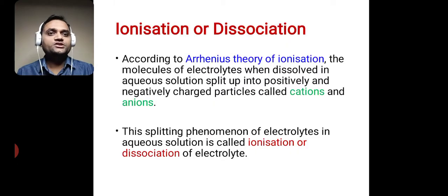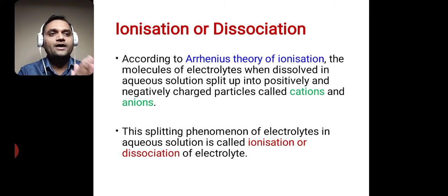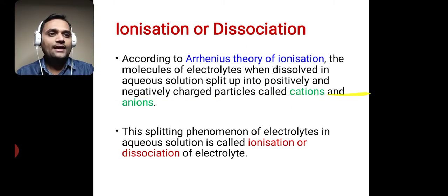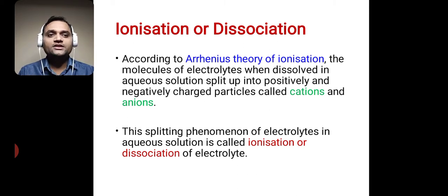According to Arrhenius theory of ionization — Arrhenius gave the theory of ionization — the molecules of electrolytes when dissolved in aqueous solution split up into positively and negatively charged particles called cations and anions. This splitting phenomenon of electrolytes in aqueous solution is called ionization or dissociation of electrolytes.